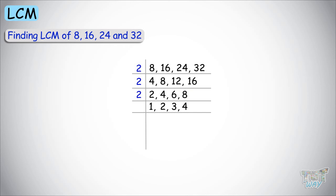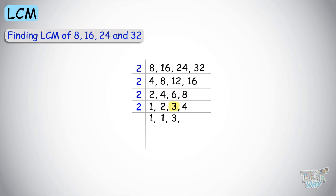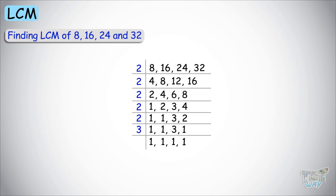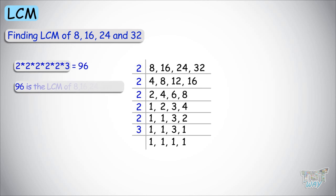Now we have 1, 2, 3, 4. Divide by 2 again: 1 stays 1, 2 divided by 2 is 1, 3 is not divisible by 2 so write 3, and 4 divided by 2 is 2. Divide by 2 once more: 2 is divisible by 2 giving 1, and 3 is not, so you get 1, 1, 3, 1. Now divide by 3, giving a final quotient of 1, 1, 1, 1. Multiply all the numbers on the left-hand side: 2 times 2 times 2 times 2 times 2 times 3, which equals 96. So 96 is the LCM of 8, 16, 24, and 32 — the least number which is a multiple of all four numbers.